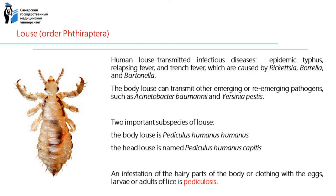Heavy infestations of lice may cause intense skin irritation and scratching, leading to secondary infections. The flattened bodies of lice range from 0.33 mm to 11 mm in length; females are usually larger than males. The human body louse lays its eggs on clothing next to the skin. Human louse-transmitted infectious diseases are epidemic typhus, relapsing fever, and trench fever, caused by Rickettsia, Borrelia, and Bartonella.